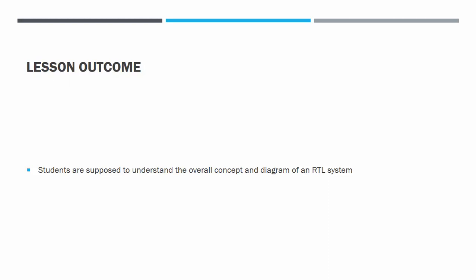For this chapter, you are supposed to understand the overall concept and diagram of an RTL system. It is just a drawing of two boxes in a big picture of RTL system.